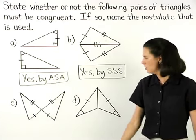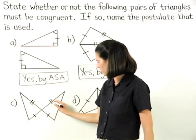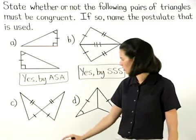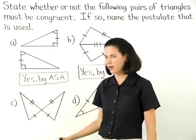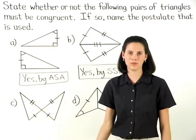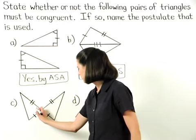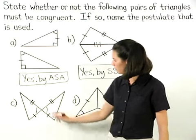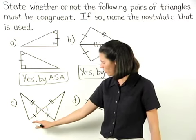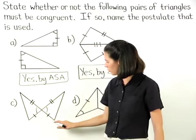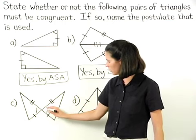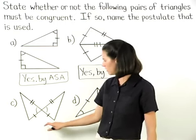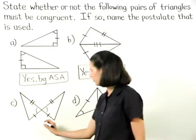In Part C, we only have two pairs of corresponding sides that are marked as congruent, but notice that we have a pair of vertical angles in the diagram, and we know that vertical angles are congruent. Since we now have two sides and the included angle of one triangle congruent to two sides and the included angle of a second triangle, we can say that these triangles are congruent by side-angle-side.